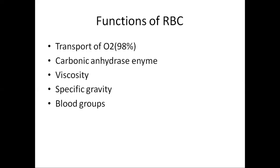The functions of RBCs include: transporting 98% of oxygen to tissues via hemoglobin; facilitating CO2 transport through the carbonic anhydrase enzyme present inside RBCs; providing viscosity and specific gravity to blood; and playing a role in blood group determination, since antigens representing blood groups are present on the surface of RBCs.